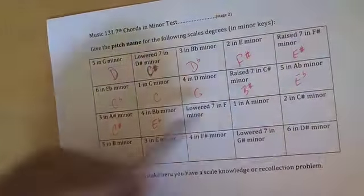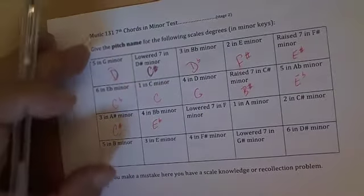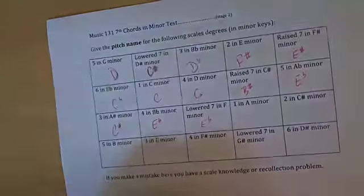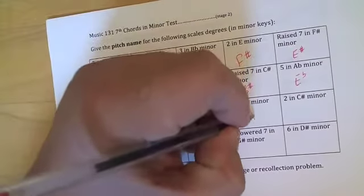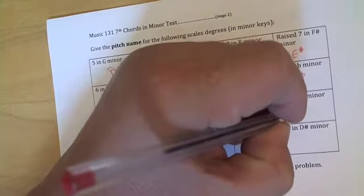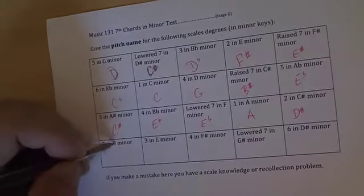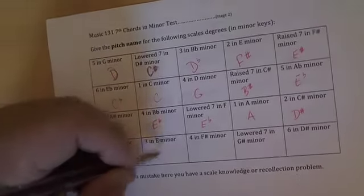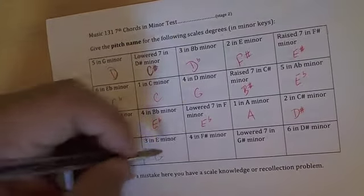We're not worried about qualities, we're just pinpointing scale degrees. Lowered there will be E flat, whole step down. Tonic is A, two will be a whole step up. Five will be B, D sharp, F sharp for the minor chord. Three will be E, G, B, so it'll be a G.